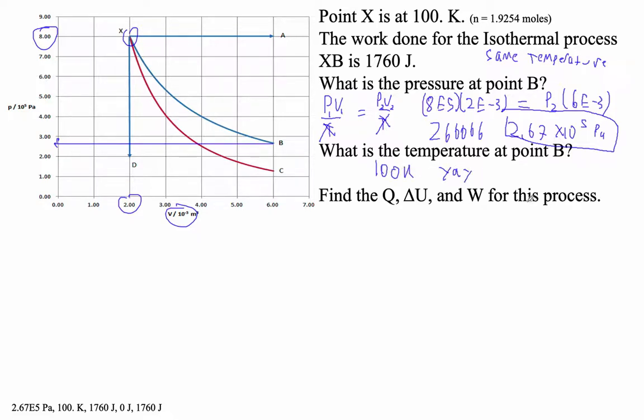So now let's find the Q, delta U, and W for this process. Remember that Q is equal to delta U plus W. Also remember that if the temperature doesn't change, U is 3 halves nRT. So the change in U is zero. The change in temperature is nothing. Therefore, the change in internal energy is zero.